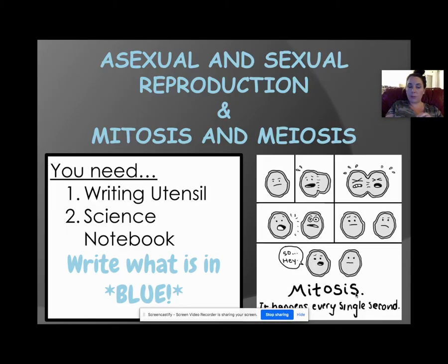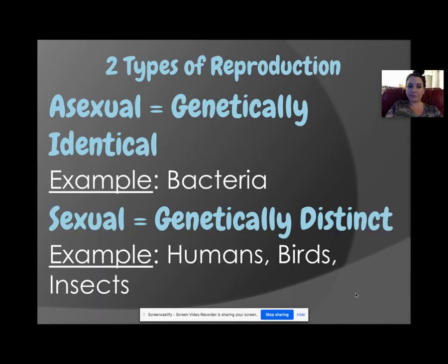You're going to be writing what's in blue. I tried to make it not too much, so hopefully this is a shorter video. There are two types of reproduction: asexual reproduction and sexual reproduction.